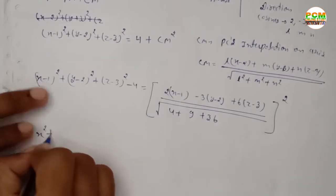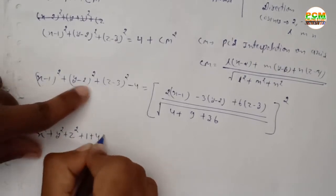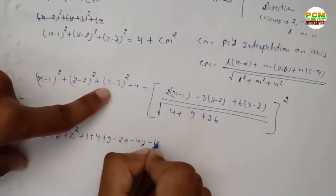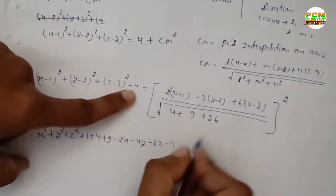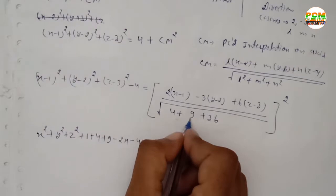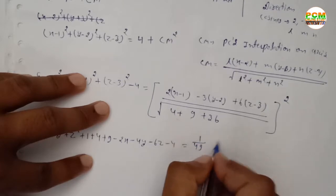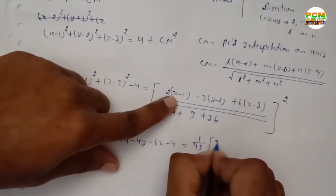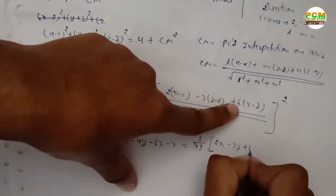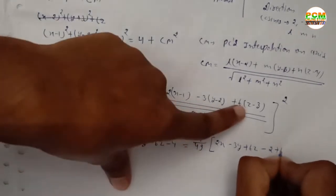Expanding: x² + y² + z² and the b² terms give 1, 4, and 9. The 2ab terms give -2x, -4y, and -6z. On the right side, 4 + 9 + 36 = 49, and the square root squared cancels, leaving 1/49 times the numerator squared.